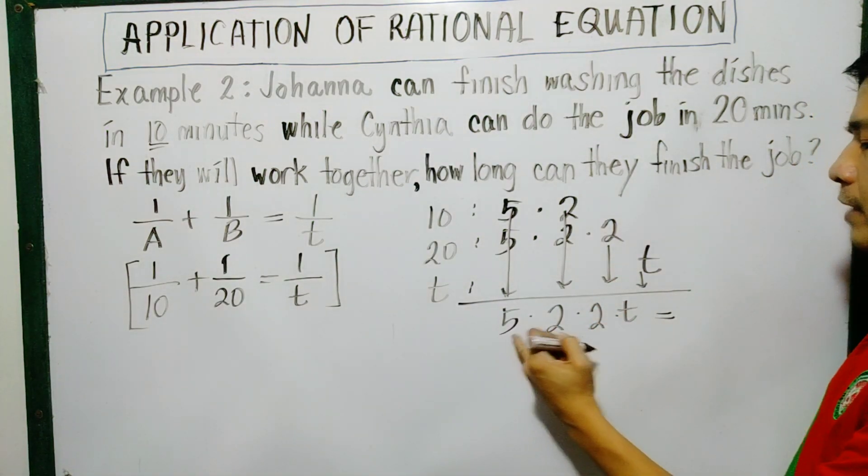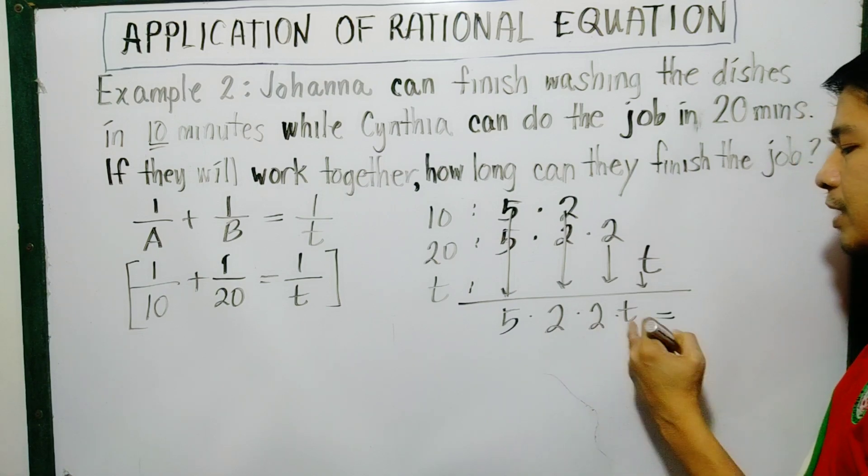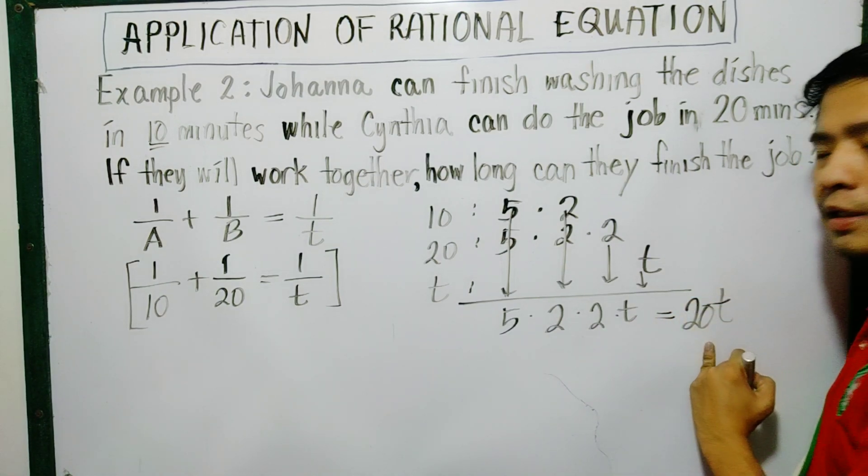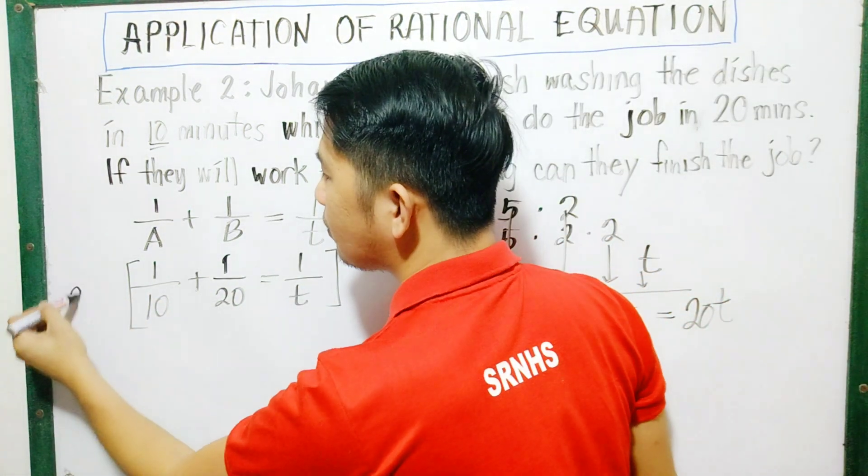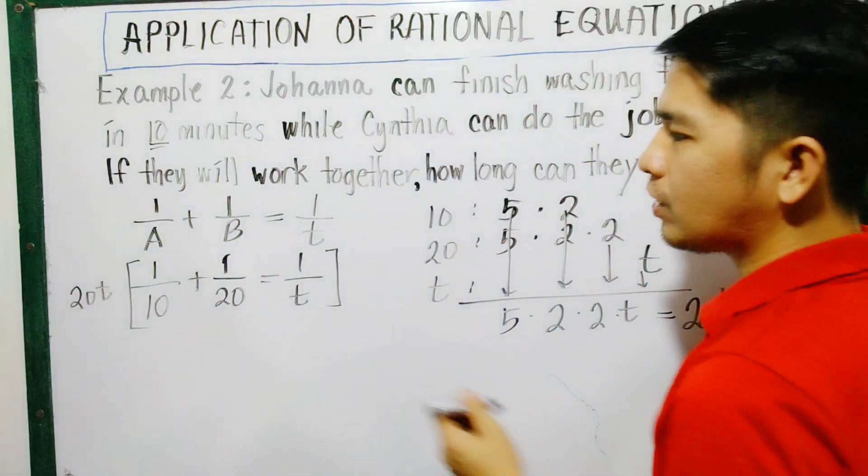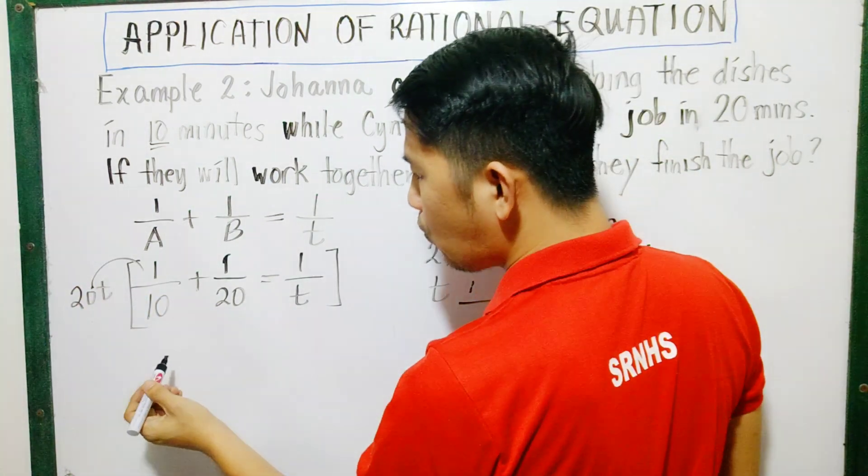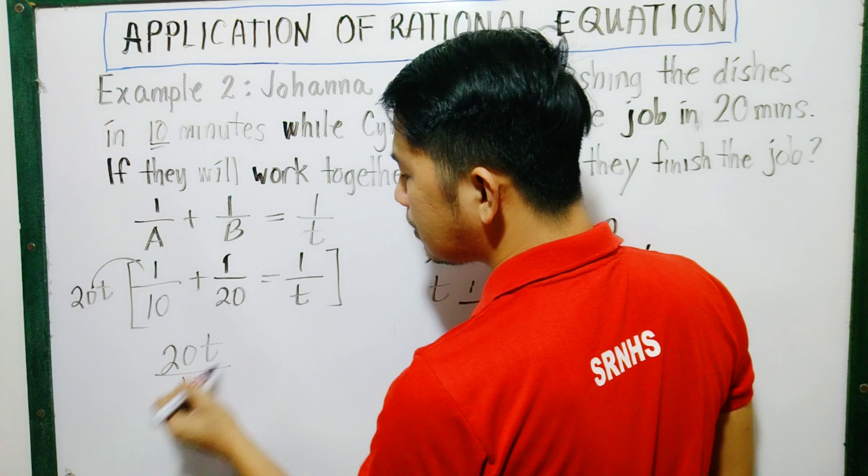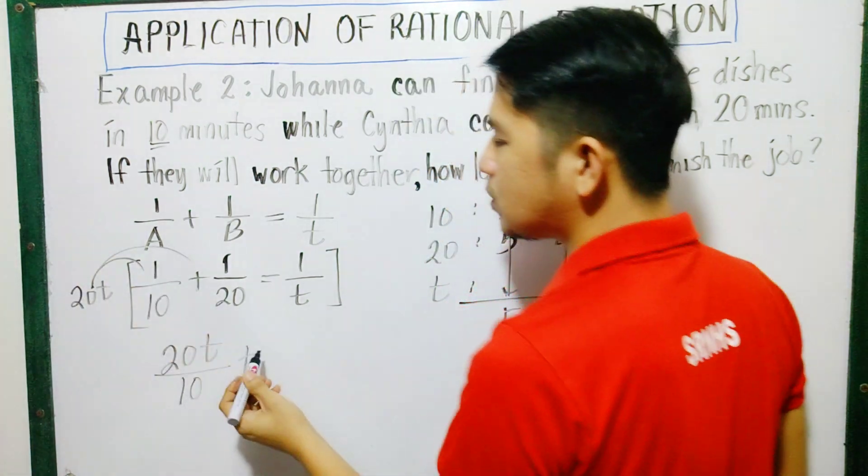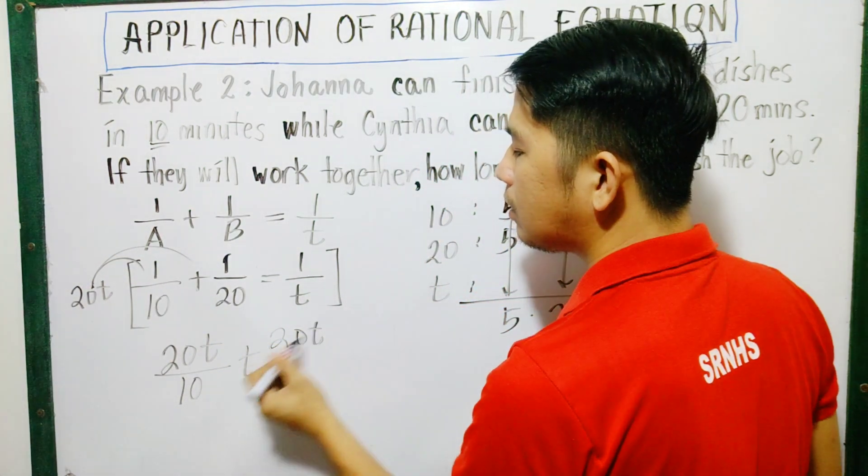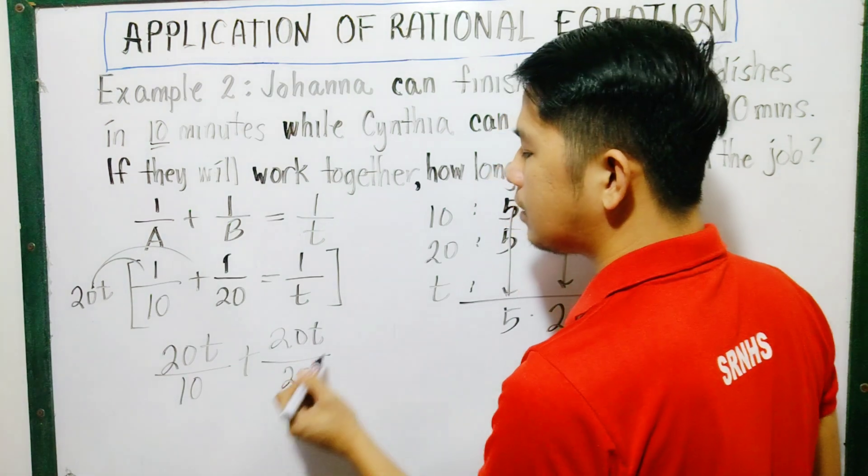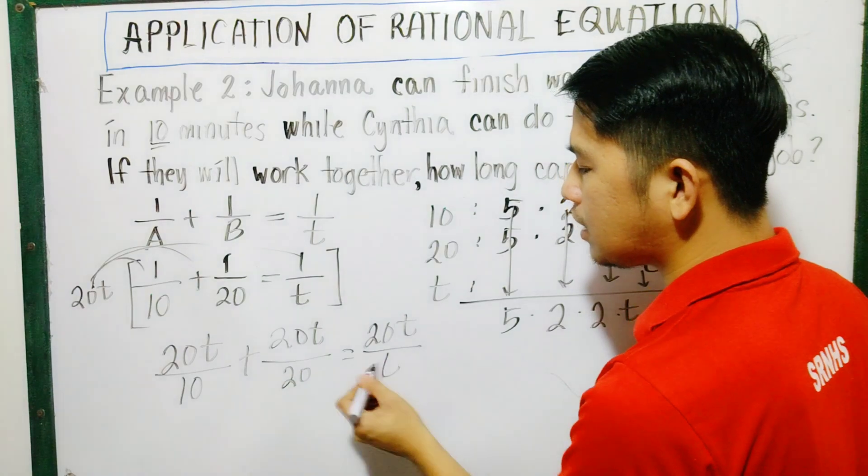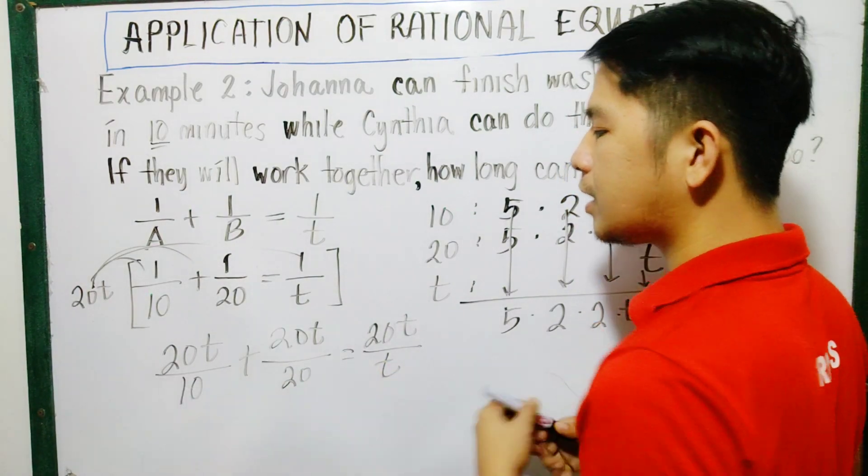So multiply: 5 times 2 is 10, times 2 is 20, times T is 20T. This will be our LCD. So multiply by it. 20T times 1 is 20T over 10, plus 20T times 1 is 20T again, all over 20, equals 20T all over T.